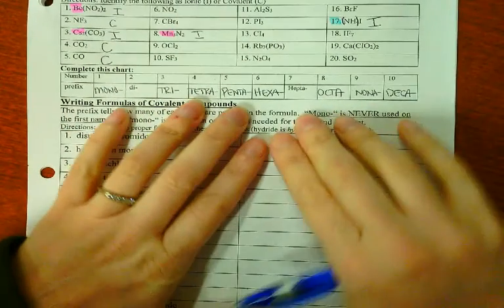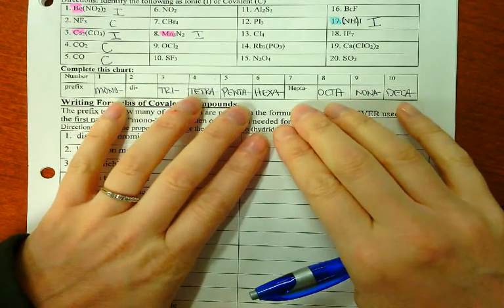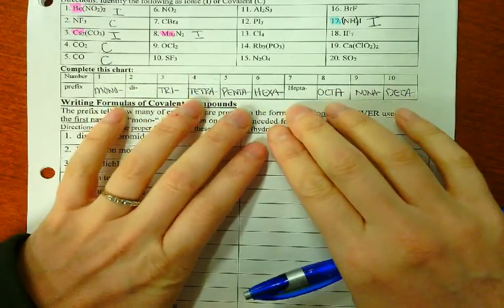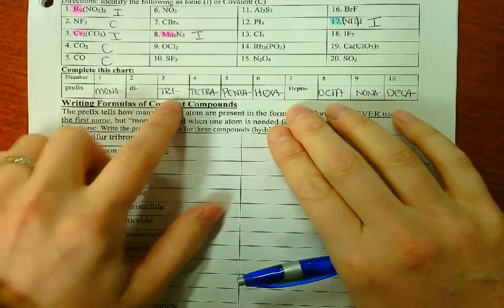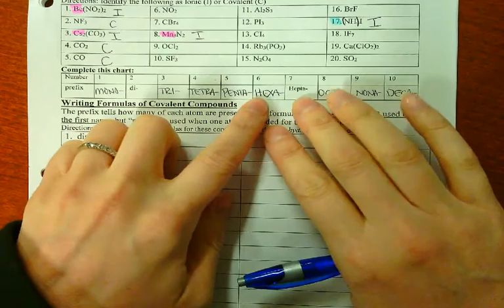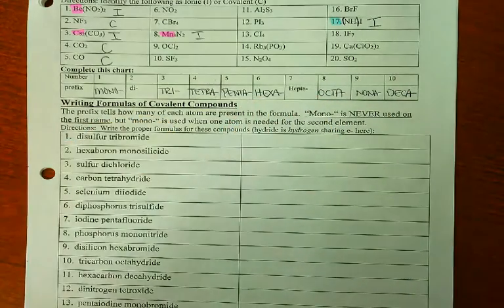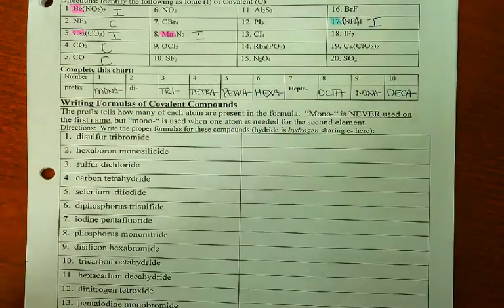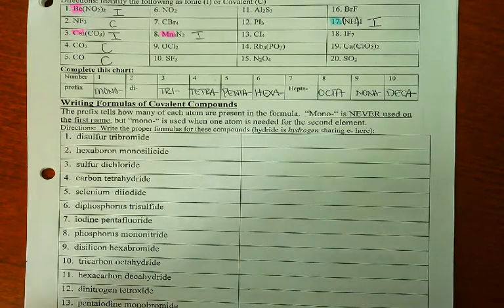You should have this from your notes unless you were absent. If you're absent, pause and copy these. These are the prefixes for covalent naming: mono, di, tri, tetra, penta, hexa, hepta, octa, nona, deca. You've got to get those memorized. Hopefully doing just these three pages in the homework will get them memorized for you.